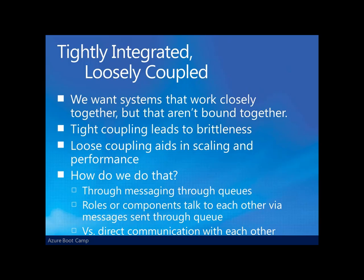What we really want to build with Windows Azure applications are tightly integrated, loosely coupled systems — systems that work closely together but aren't bound tightly. Tightly coupled systems lead to brittle code, whereas loosely coupled systems aid in scaling and performance. We're going to use message queues to achieve that tight integration and loose coupling. Roles or components in our applications are able to talk to each other via messages sent through the queue, versus direct communication. Through a message queue, a component can communicate using only knowledge of messages, without needing to know details about the other component.